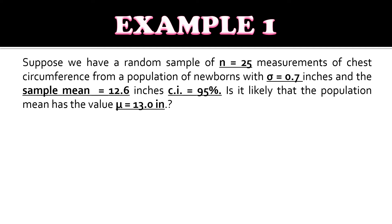For example one, suppose we have a random sample of n equals 25 measurements of chest circumference from a population of newborns with a standard deviation of 0.7 inches and a sample mean of 12.6 inches. The confidence interval is 95%. The question is: is it likely that the population mean has a value of 13 inches?